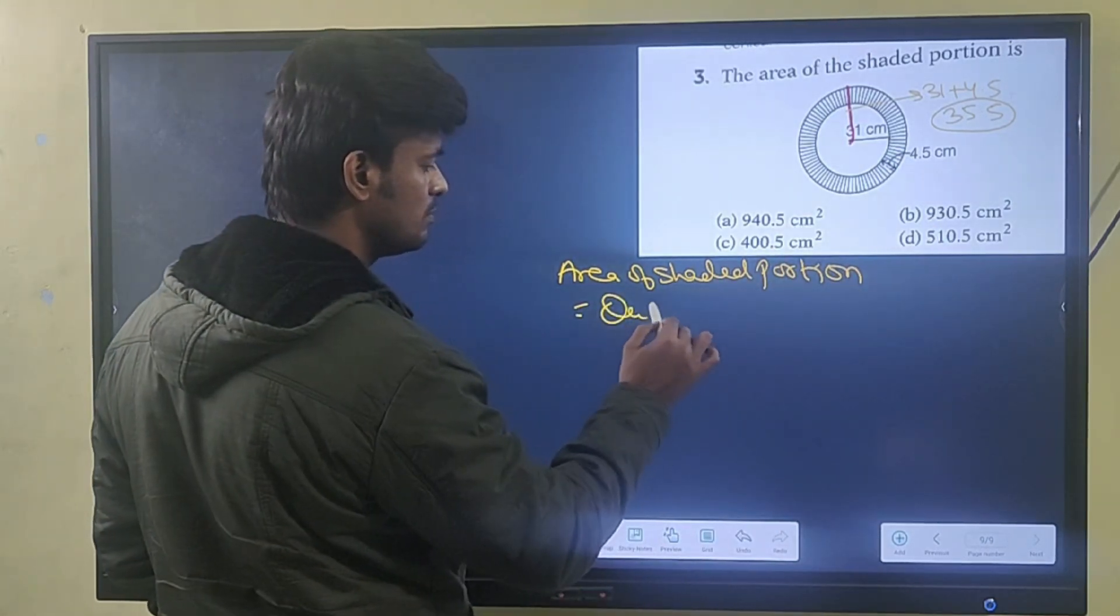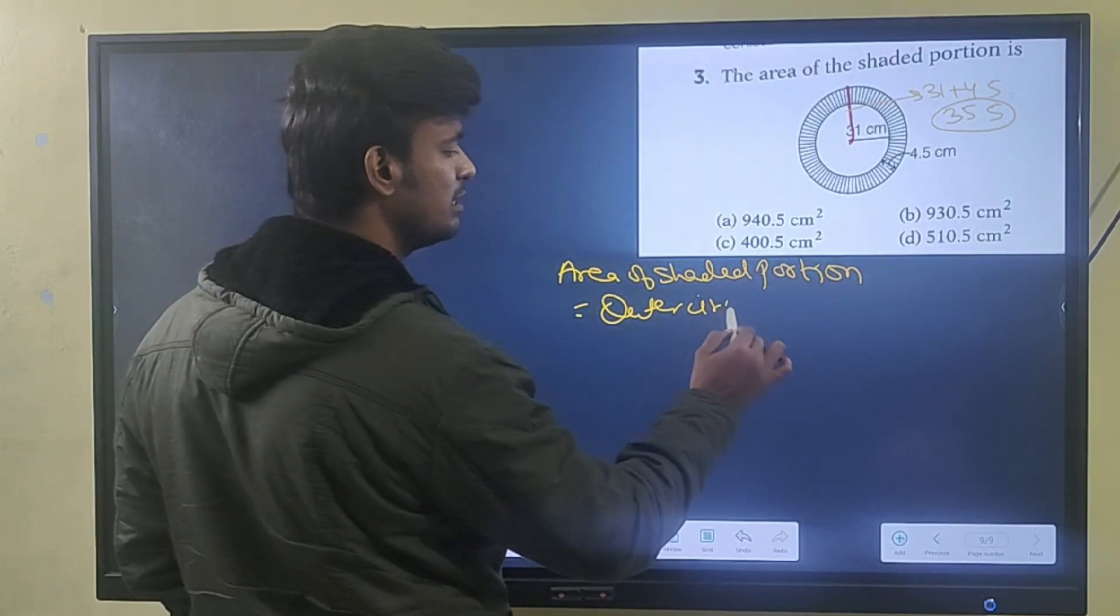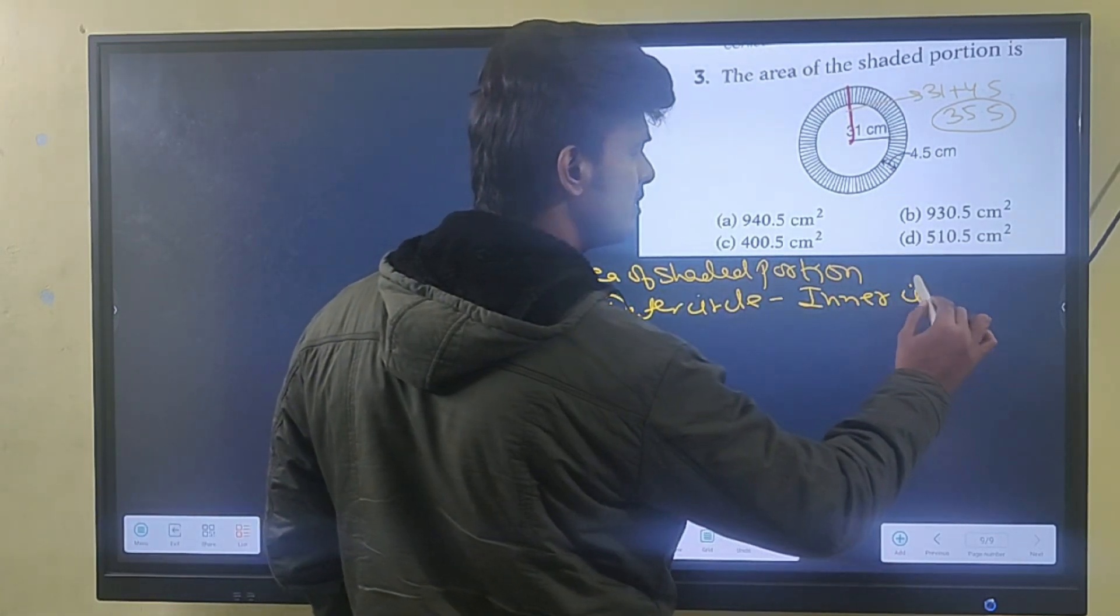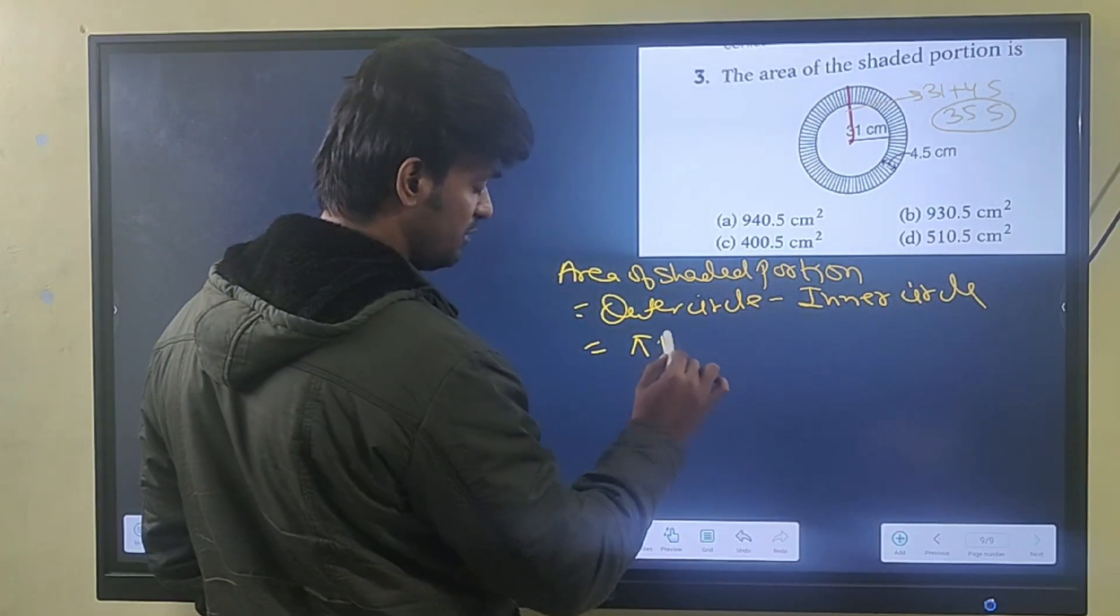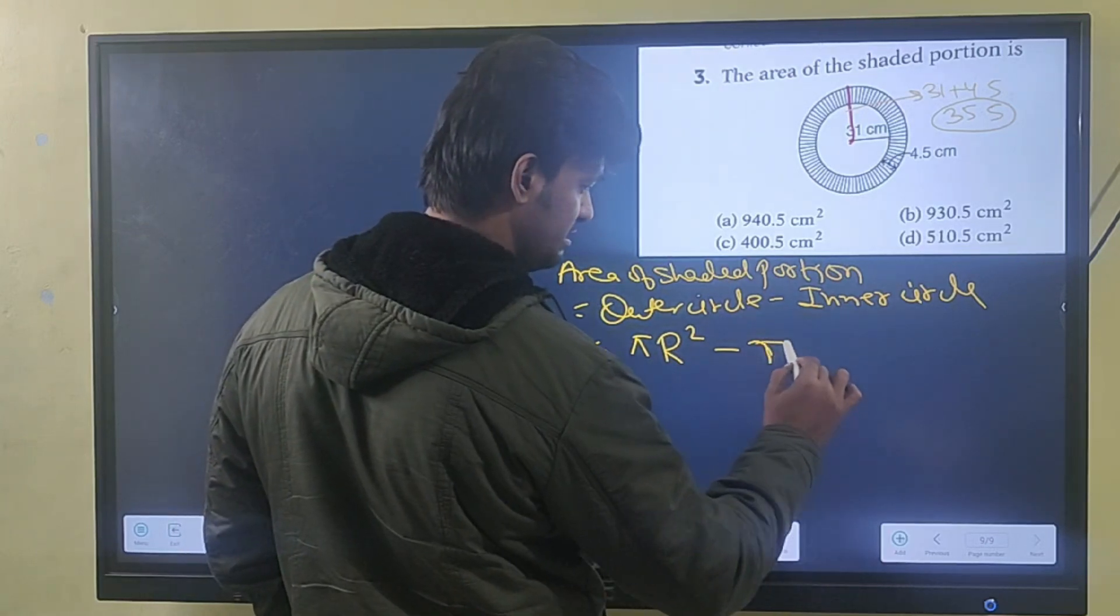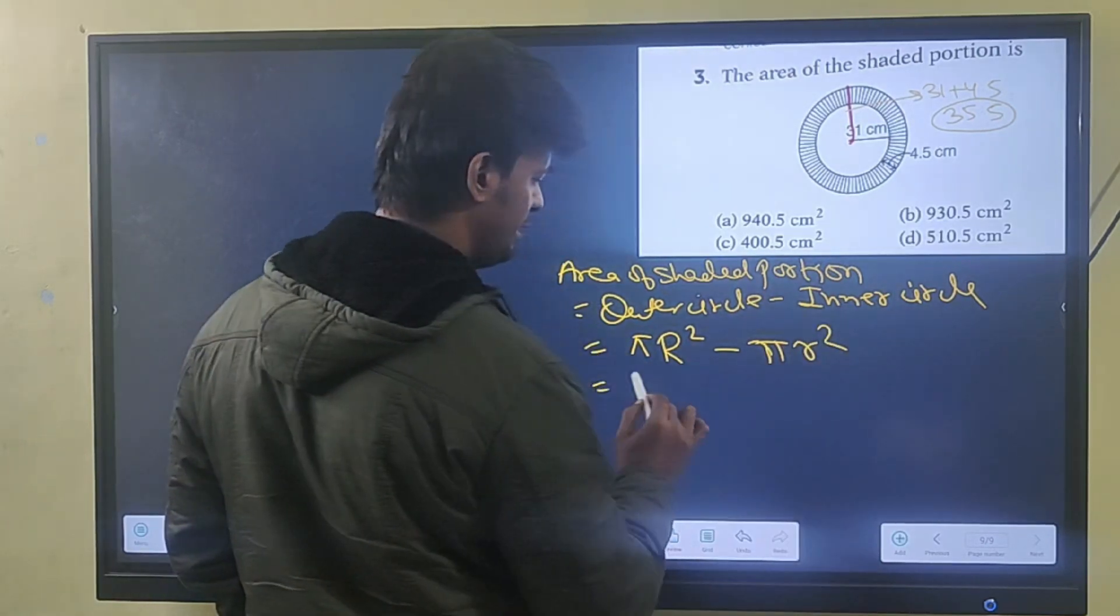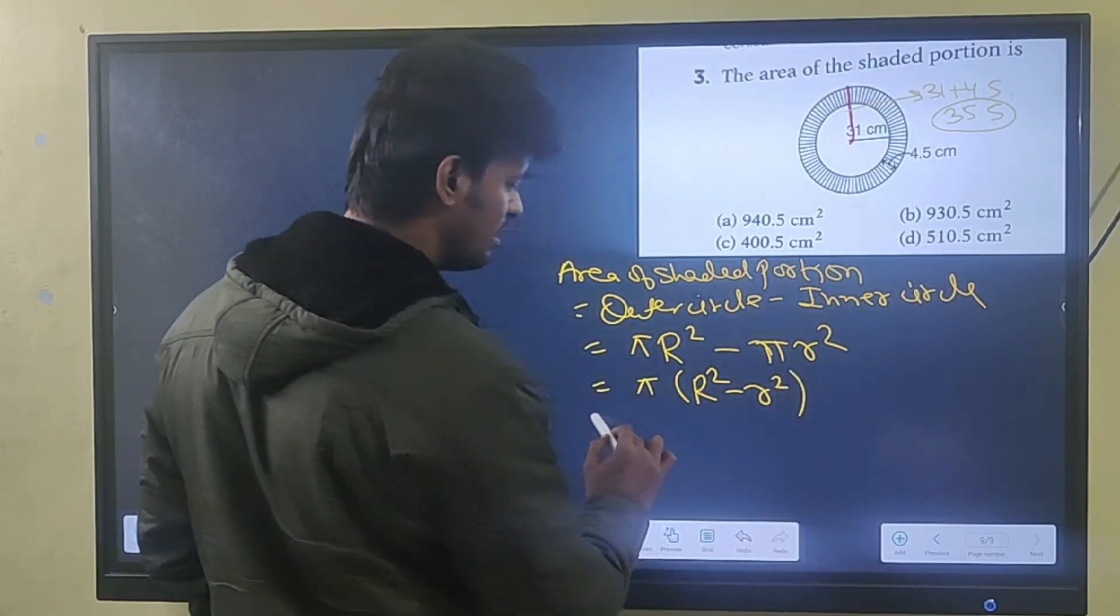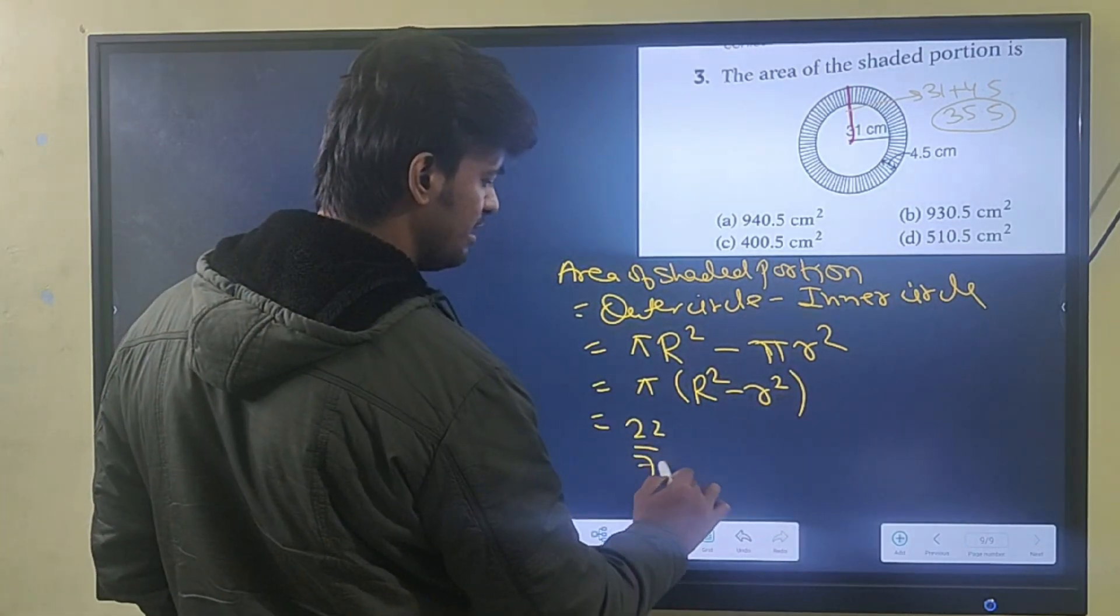Equal to outer circle minus inner circle. Pi outer circle R squared minus pi inner circle r squared. Taking pi common: pi(R squared minus r squared). Pi value is 22 by 7.